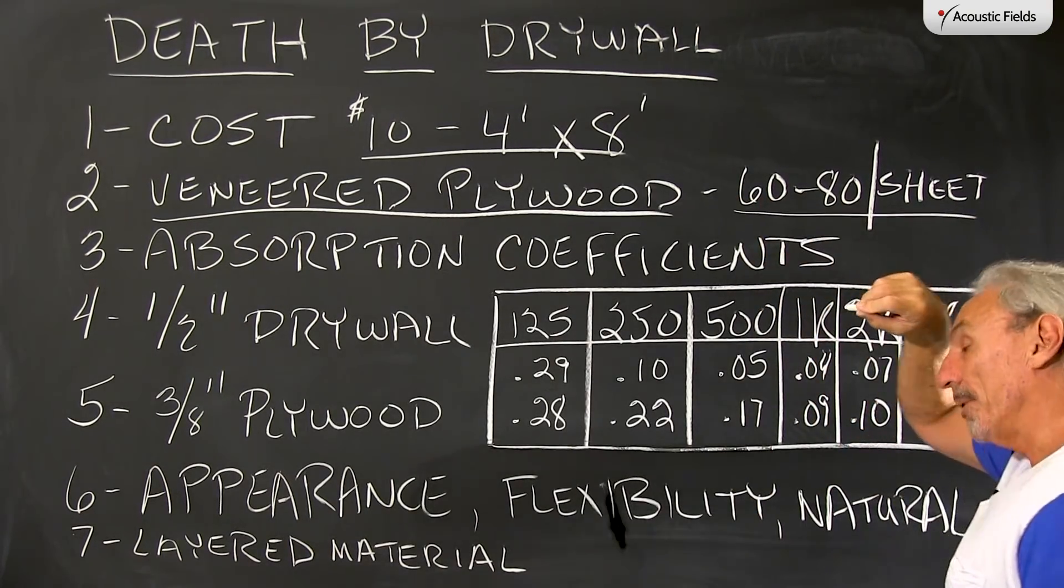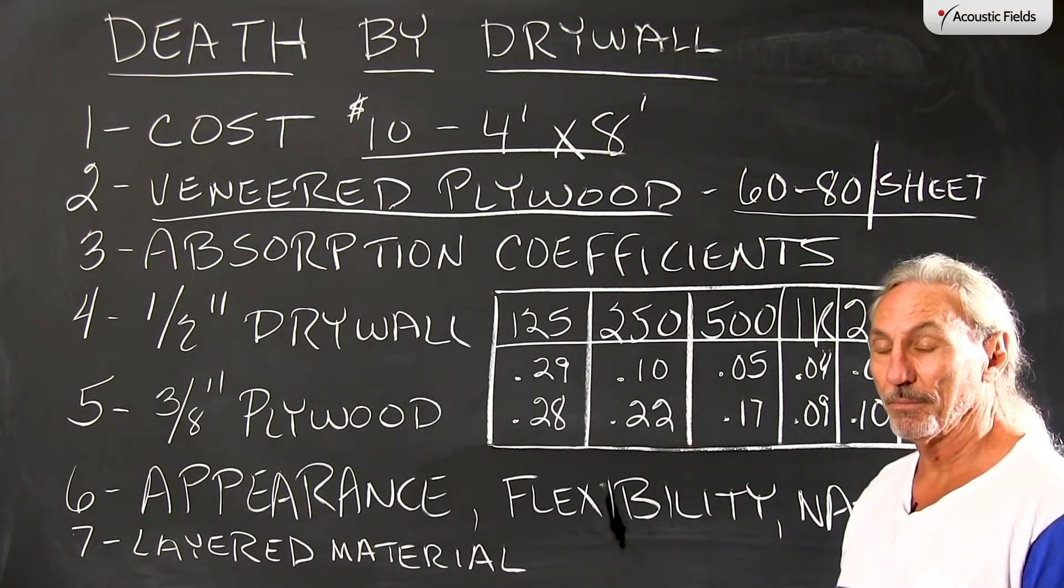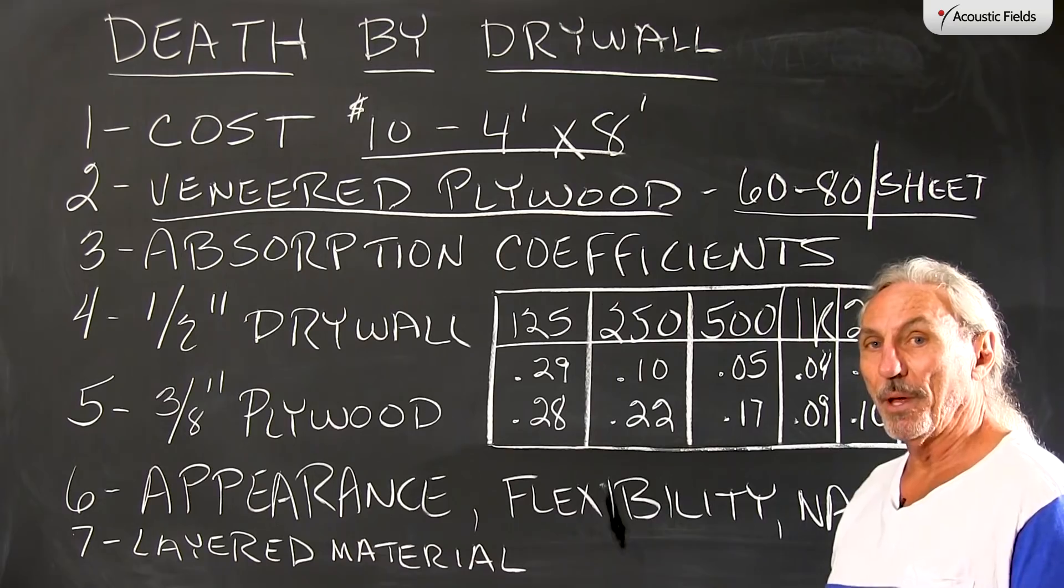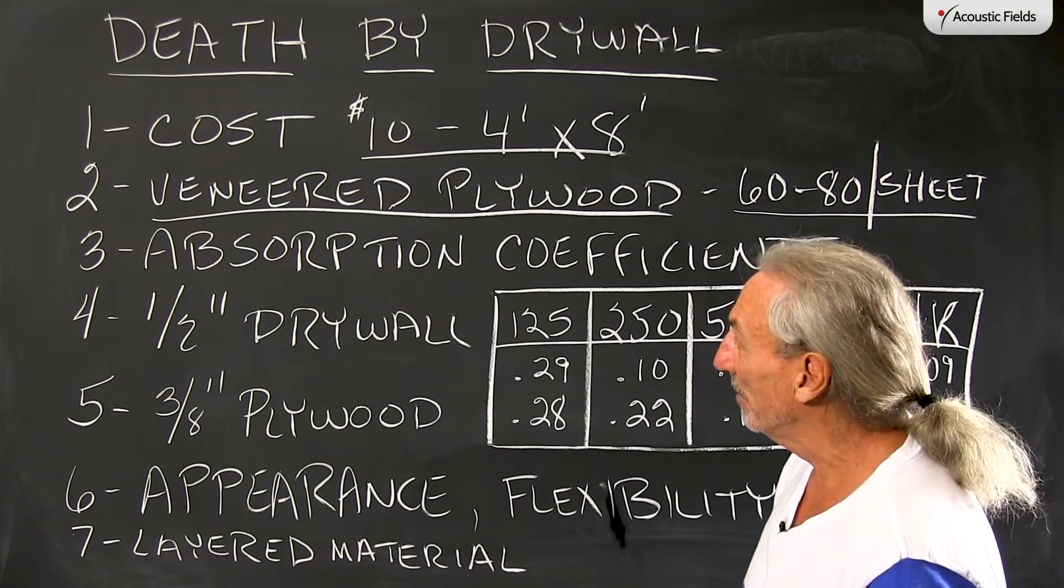I think veneered plywood, most markets, $60 to $80 a sheet, so there's a big cost difference. But let's look at plywood's advantages versus the cost and see what we can come up with.